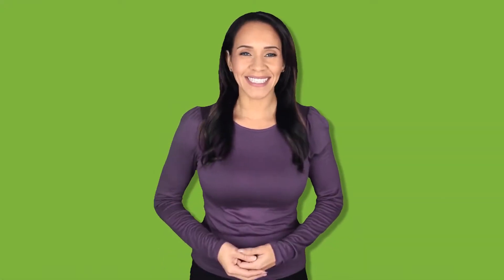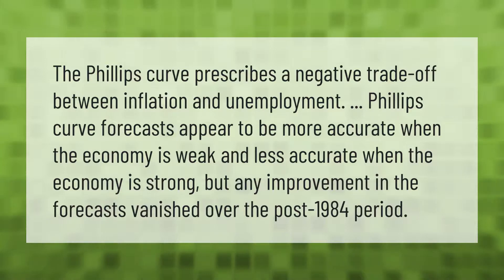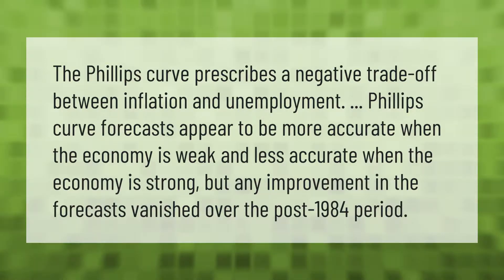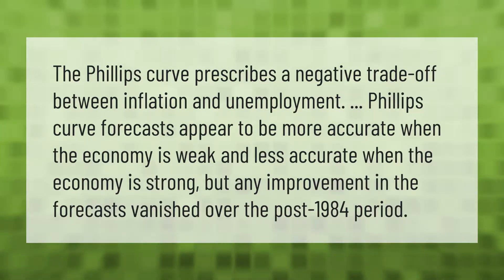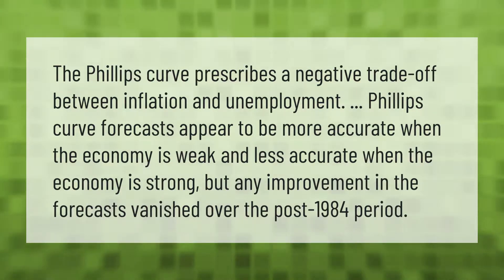The Phillips curve prescribes a negative trade-off between inflation and unemployment. Phillips curve forecasts appear to be more accurate when the economy is weak and less accurate when the economy is strong, but any improvement in the forecasts vanished over the post-1984 period.